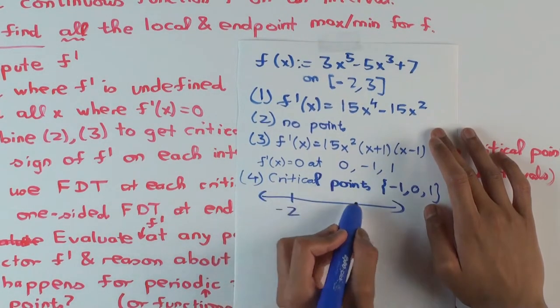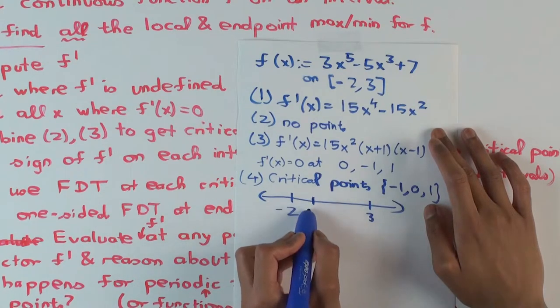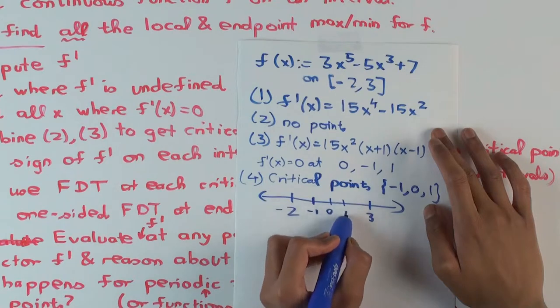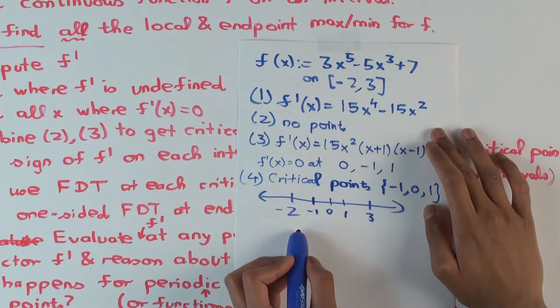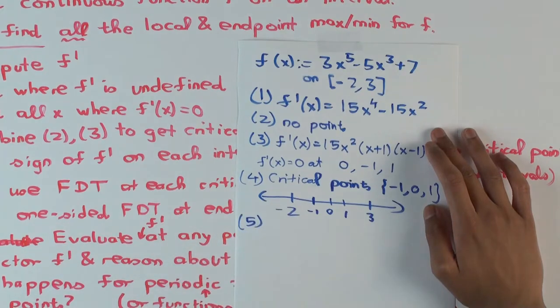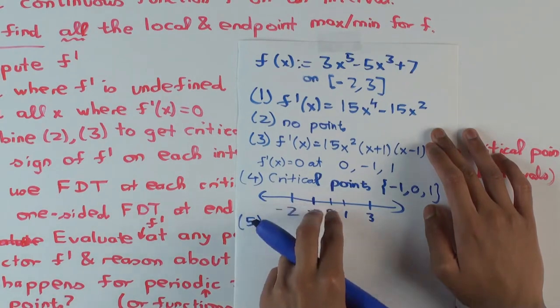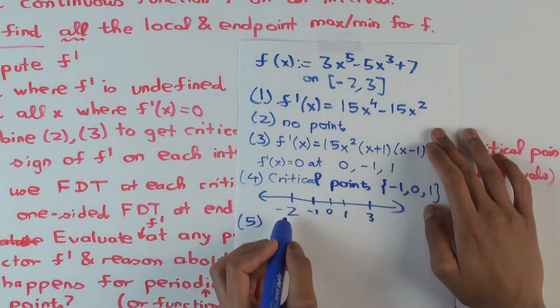Let's make a picture now. You're starting at negative 2 going up to positive 3. Your critical points are negative 1, 0, 1. So we have to find the sign of F prime on what intervals? 4 intervals, right? These, this, this, and this.